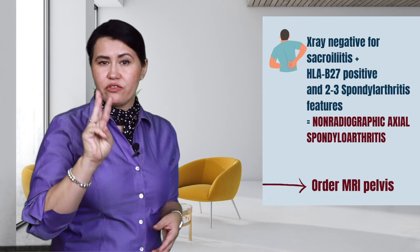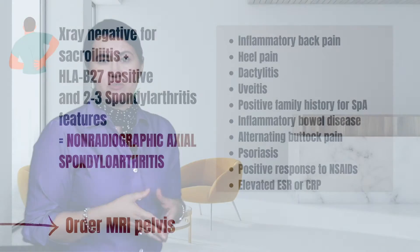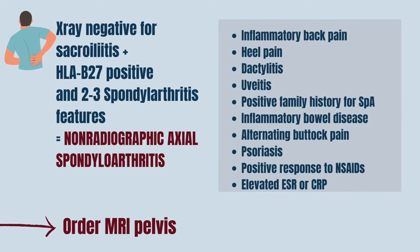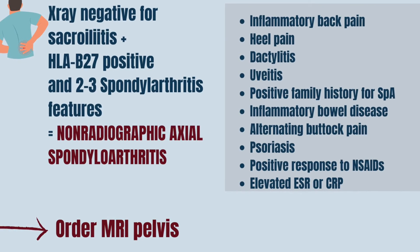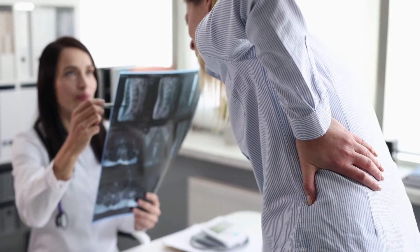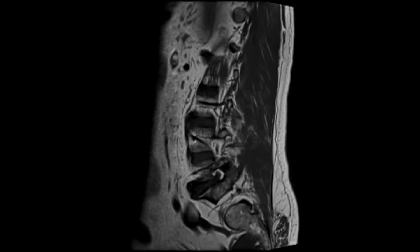Step 3: Patients that do not have radiographic sacroiliitis but have just 2 or 3 Spondyloarthritis features and a positive HLA-B27 can generally be diagnosed with what we call non-radiographic axial spondyloarthritis. If the HLA-B27 is negative, then the likelihood of having this disease is very low. When suspicion is still high, I order an MRI of the sacroiliac joints, and that will help me make the diagnosis.